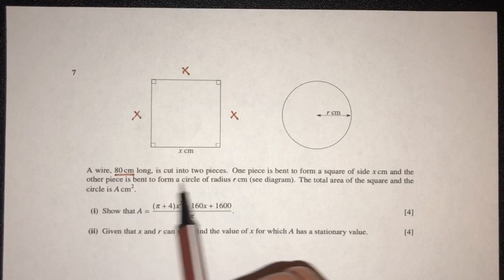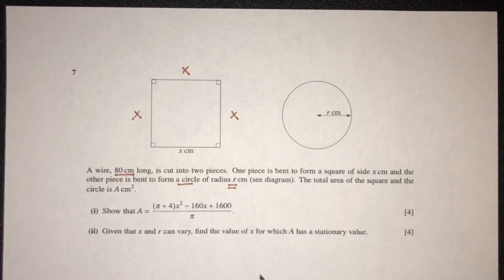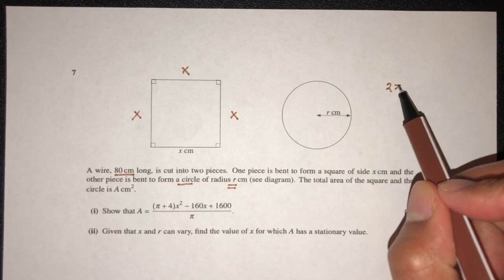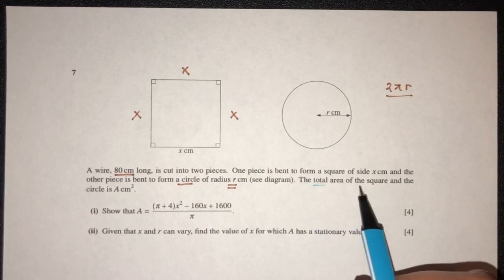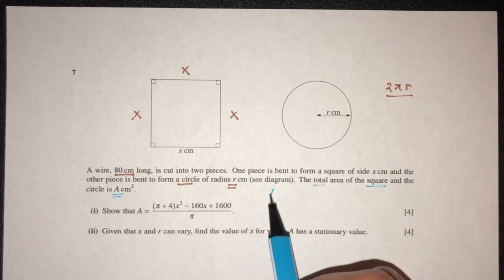And the other piece is bent to form a circle of radius r. So circle of radius r, what is the circumference of a circle? That will be 2πr. Okay, that will be the circumference of a circle. Now, the total area of the square and the circle is A, area is A.